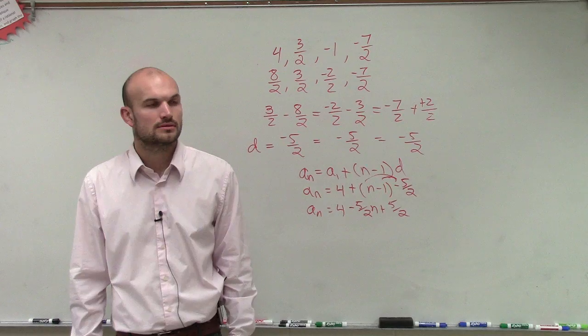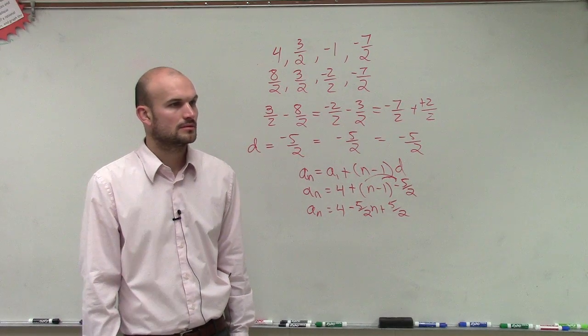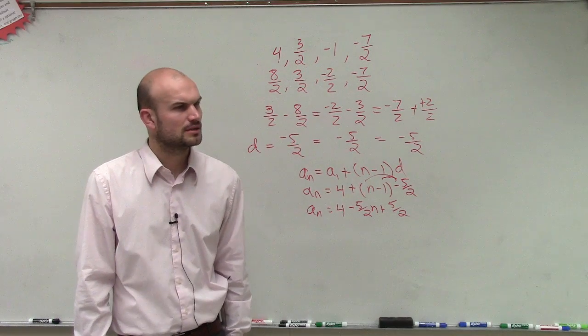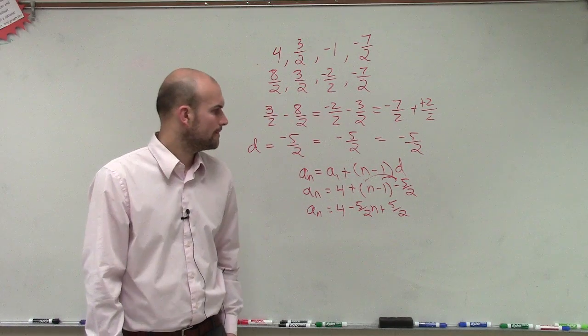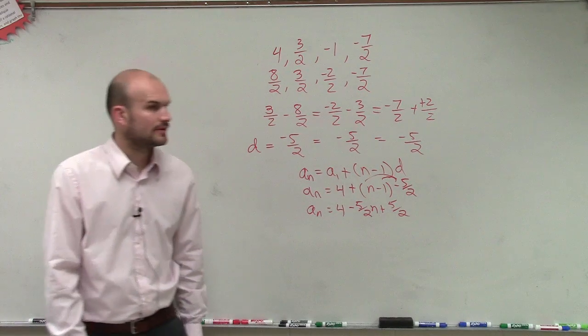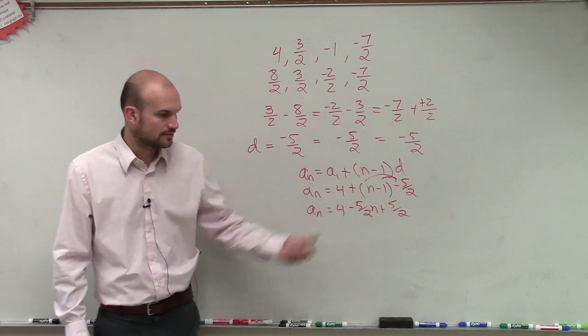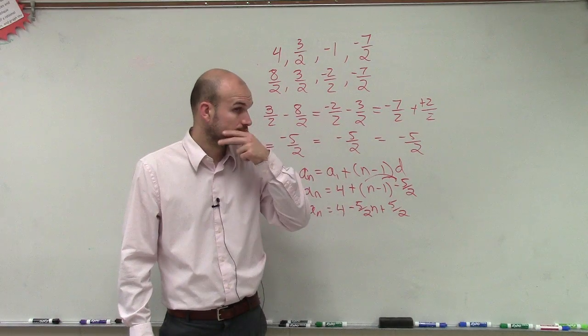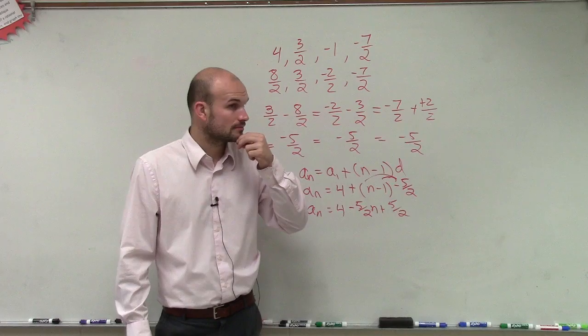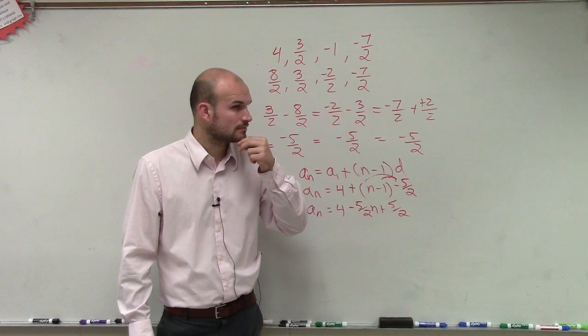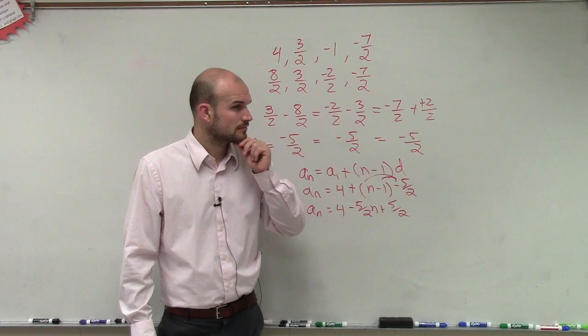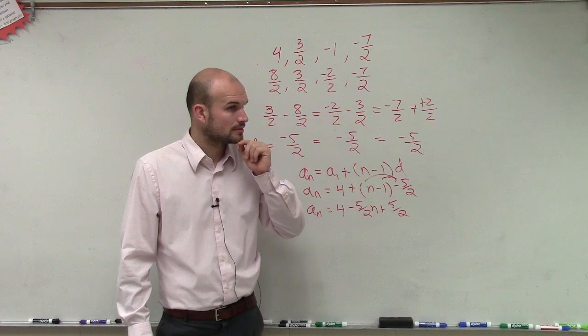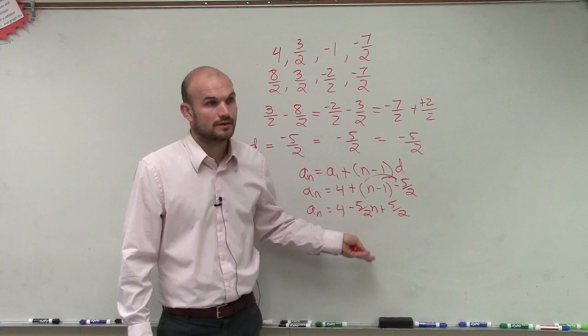What about a k plus 1 equals a k notation? I don't know where I got that, but it works. I'll look at what you're using. But to find a 2 would be a 1, 8 over 2 minus... Well, I'm not done yet. I'm not done with the formula yet.